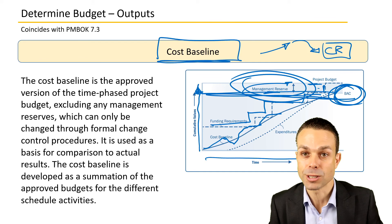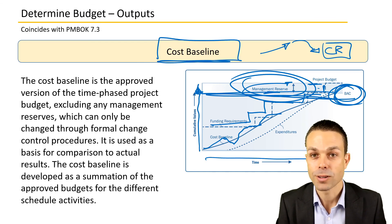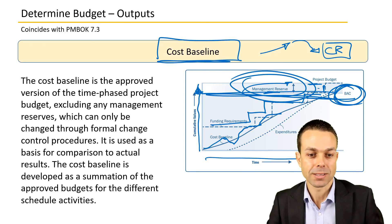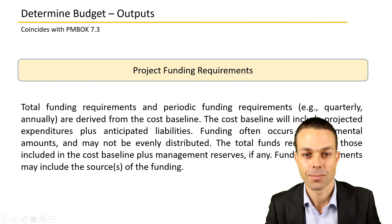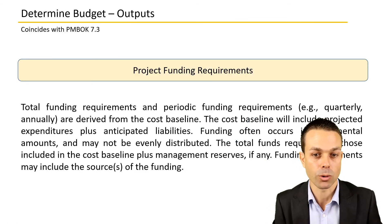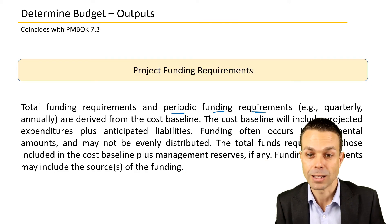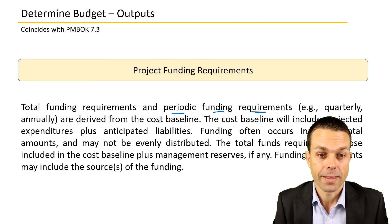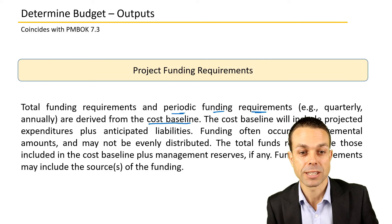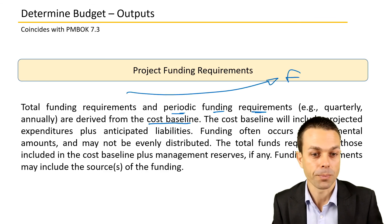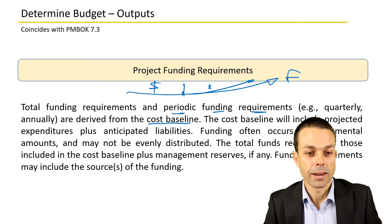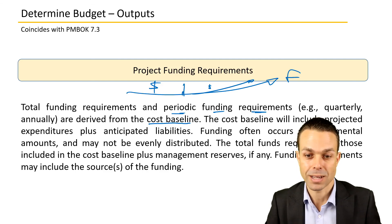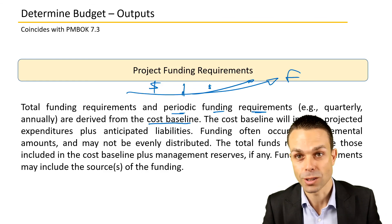The cost baseline can only be changed through formal change control procedures, and it's used as a basis for comparison to actual results as they happen. It is developed as a summation of all the approved budgets for all the different scheduled activities. Project funding requirements may be periodic — quarterly, annually, or monthly — and are derived from the cost baseline. The cost baseline includes projected expenditures, which may not be evenly distributed, plus the management reserves. Funding requirements may also include the sources of the funding.